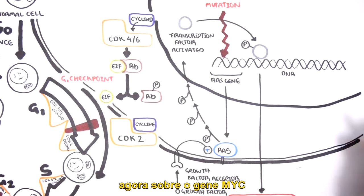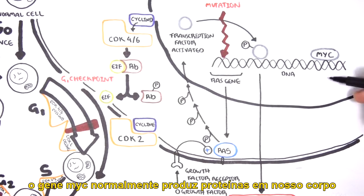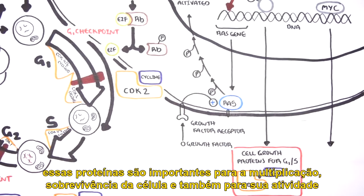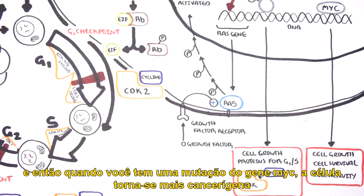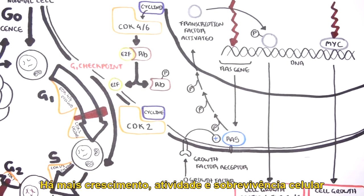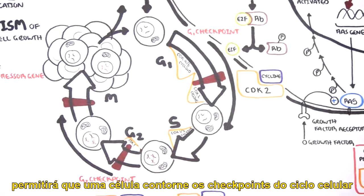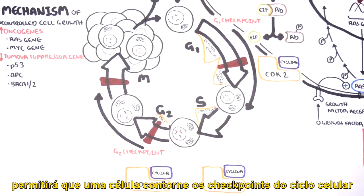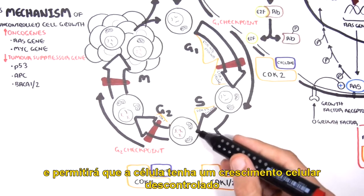The MYC gene is another oncogene. The MYC gene normally makes proteins important for cell growth, cell survival, and cell activity. When you have a mutation of the MYC gene, the cell becomes more cancerous — you get more cell growth, more cell activity, and more cell survival. Activation of these oncogenes, such as the RAS gene and the MYC gene, allows a cell to bypass the checkpoints of the cell cycle and leads to uncontrolled cell growth.